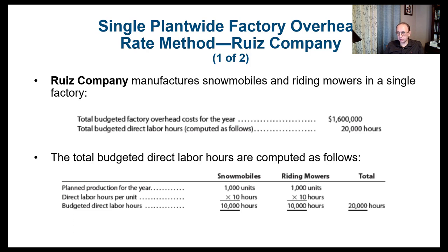The total budgeted direct labor hours are computed as well. We have snowmobiles and riding mowers, with planned production of 1,000 units each. The direct labor hours per unit — our allocation base — is 10 hours per snowmobile and 10 hours per riding mower. That means budgeted direct labor hours are 10,000 for snowmobiles and 10,000 for riding mowers, totaling 20,000 hours.